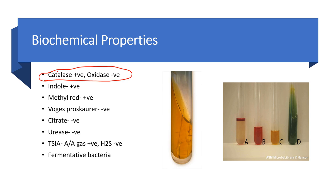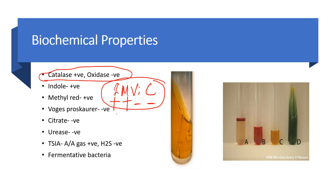Next is the IMViC test — Indole, Methyl Red, Voges-Proskauer, and Citrate. In simple terms this is called 'IMViC.' For E. coli: Indole is positive, Methyl Red is positive, Voges-Proskauer is negative, and Citrate is negative — remembered as plus, plus, minus, minus. If you also add Urease, it is plus, plus, minus, minus, minus.